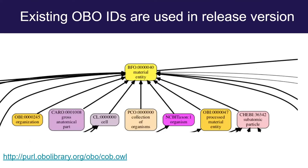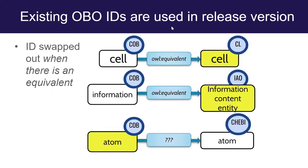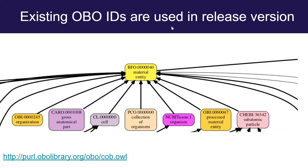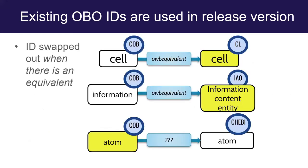When we make the COB release file, where we have equivalences, we swap out COB IDs for existing OBO IDs. So if you look at COB on OLS or OntoB, you'll see a mixture of COB IDs and IDs taken from other ontologies where there is a designated representative for that class. We only do this for concepts that are equivalent.